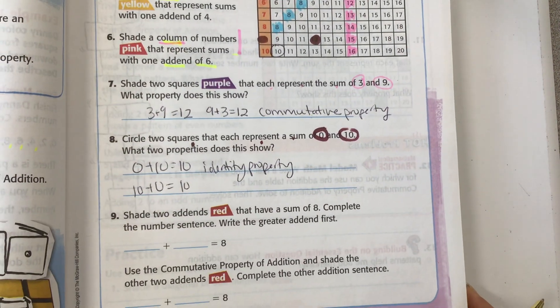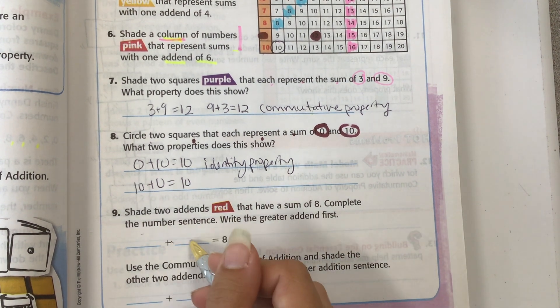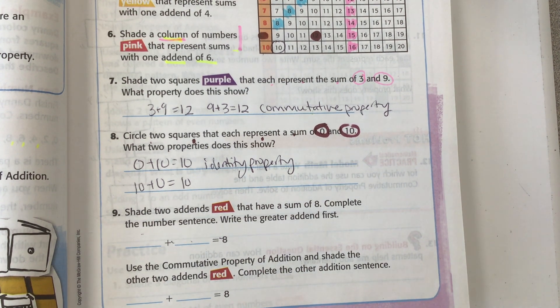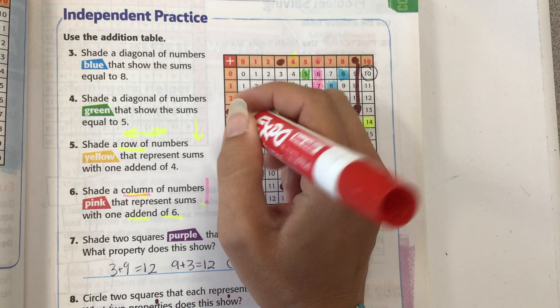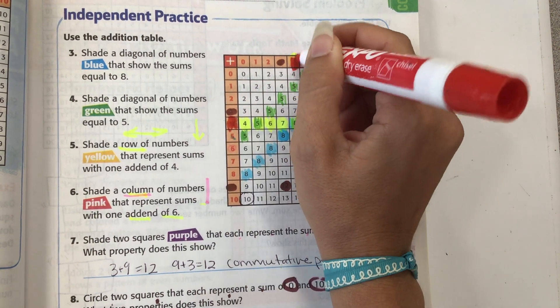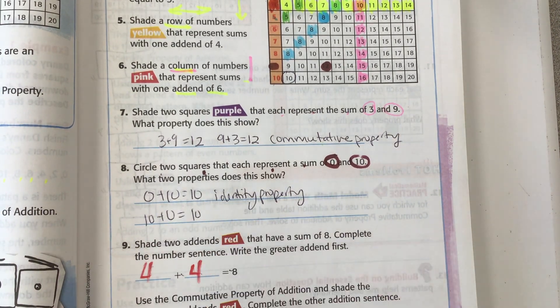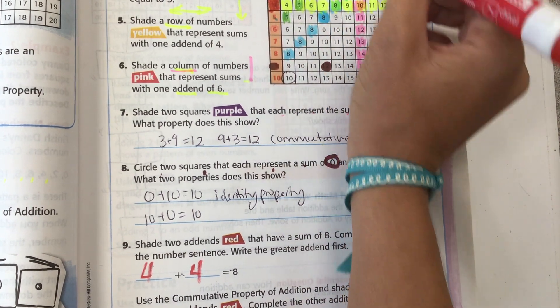All right, number nine. So we're going to shade two addends red that have a sum of eight. Complete the number sentence. Something plus something is eight. So we're going to take our red, and we're finding two numbers that equal eight. So we can find any two numbers that equal eight. Shade the two addends red. So I'm going to shade four and four. And so I'm going to put four plus four. Use the commutative property of addition and shade the other two addends red. Complete the addition sentence. Well, since I chose four and four, they're actually the same. But for the sake of this,